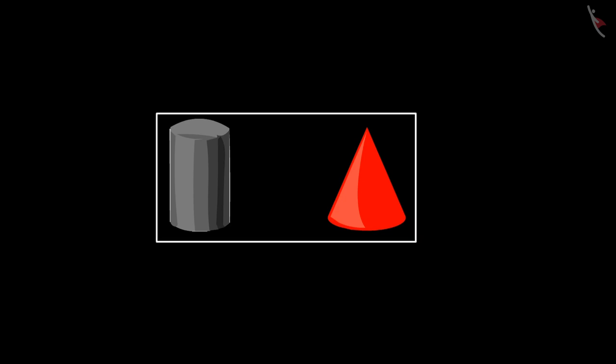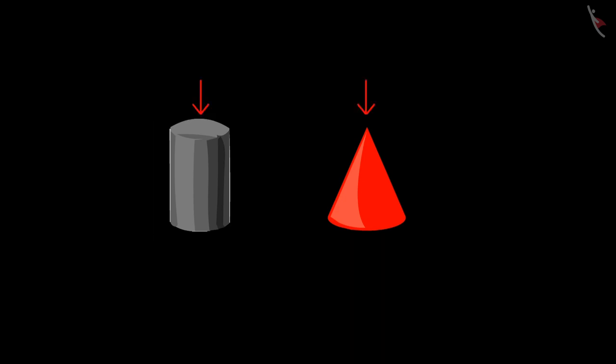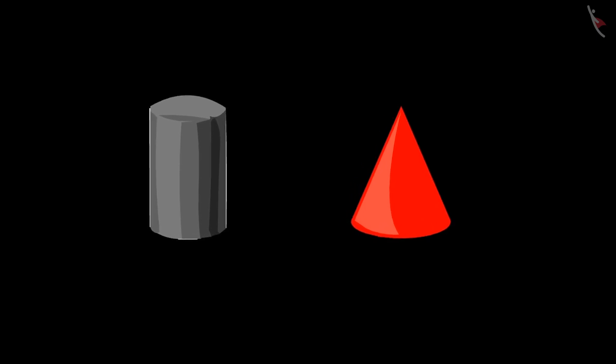The teacher responds: Chotu, you are right that both shapes are round at the bottom. But if we look at both figures from above, the cylinder-like shape is round from the top, and the cone-like shape is pointed from the top. So let us identify the cylinder-like shape and the cone-like shape out of these two objects.